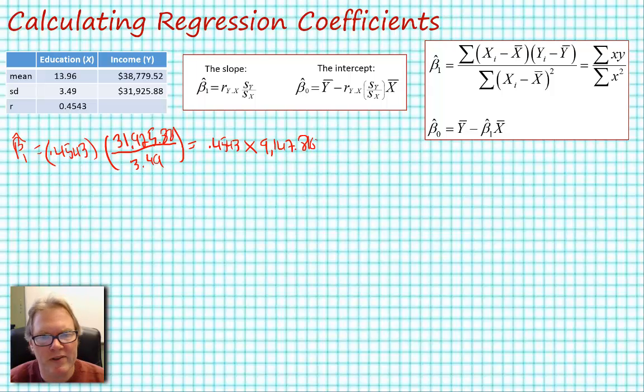And that's equal to 0.4543 times 9,147.816, and that's equal to approximately, I'm going to round this number, $4,156.